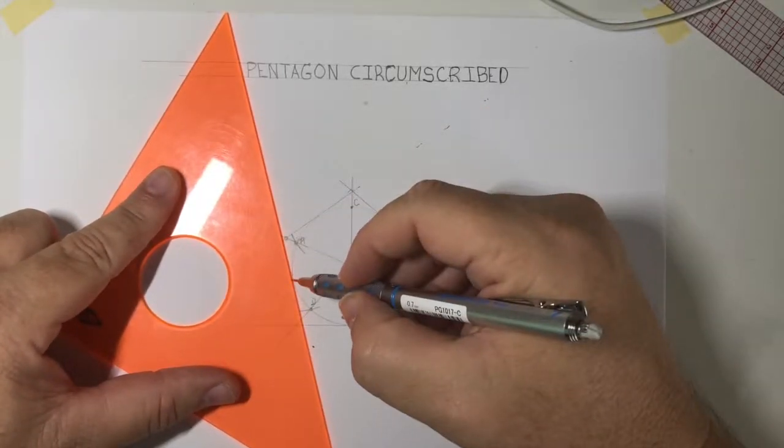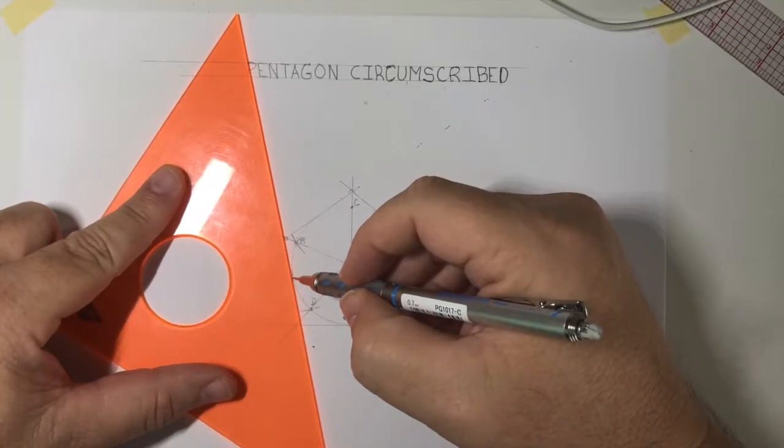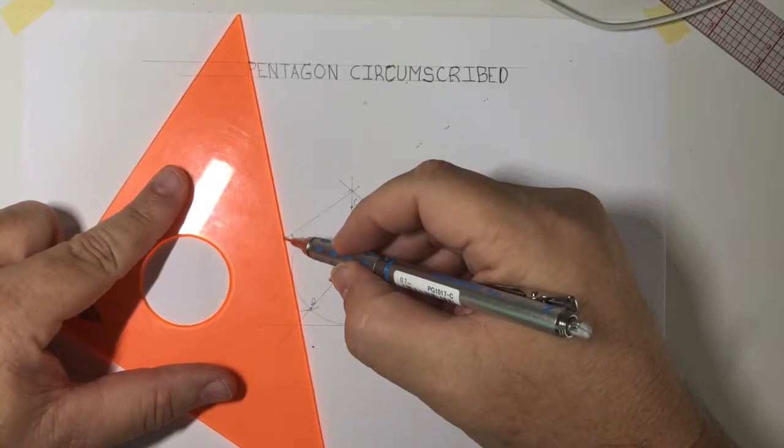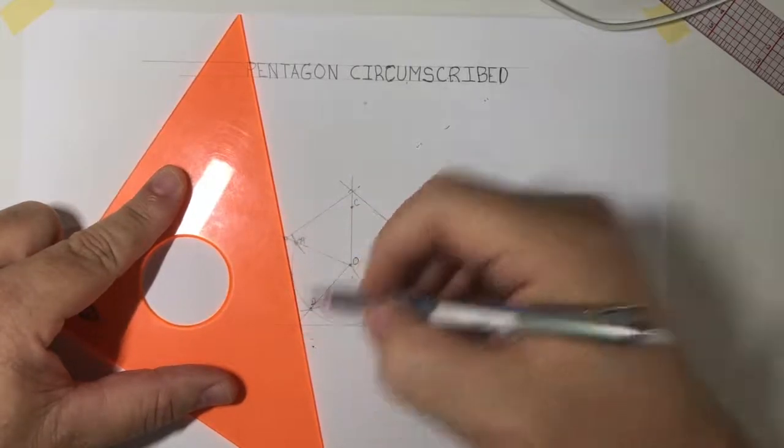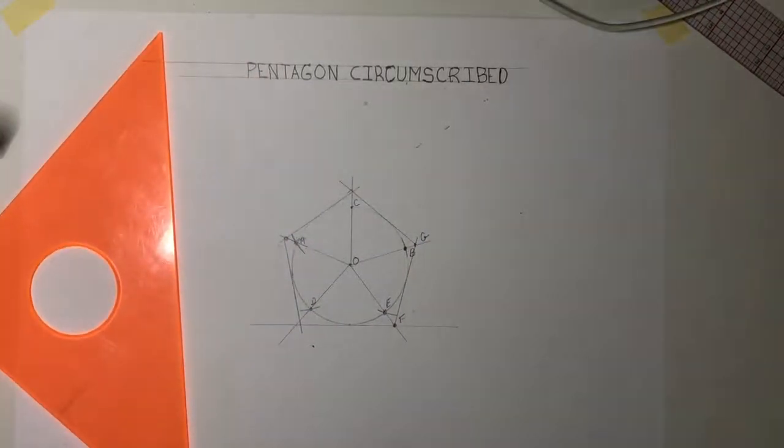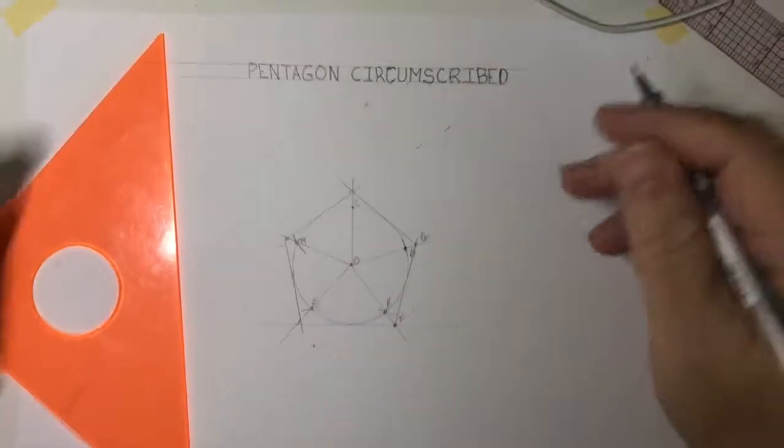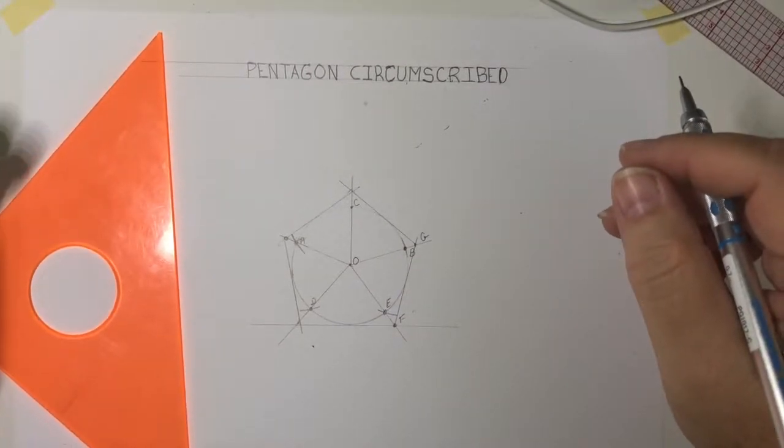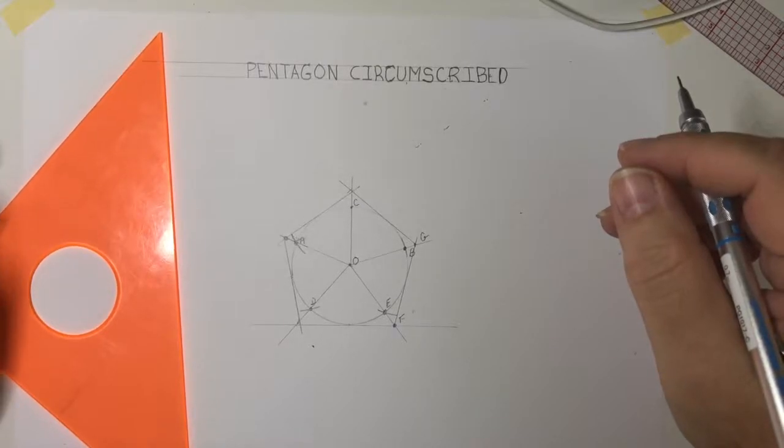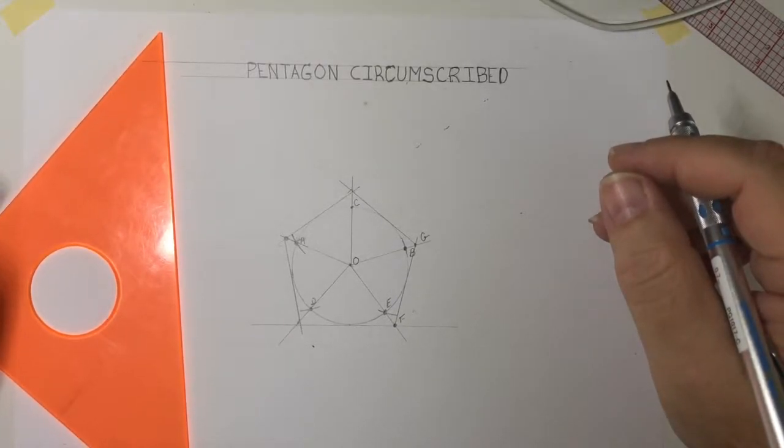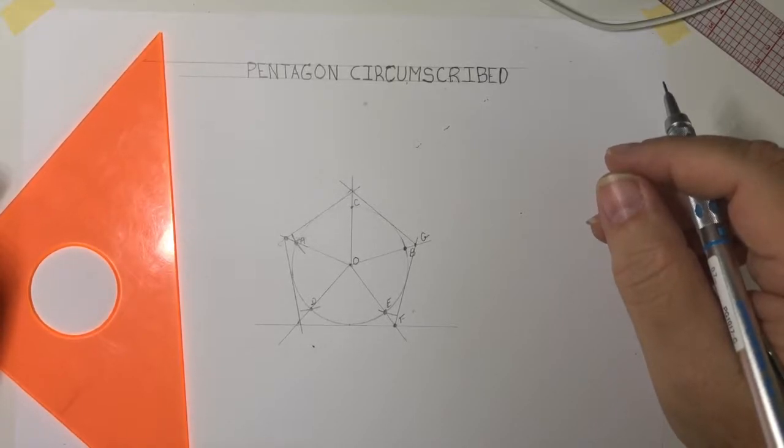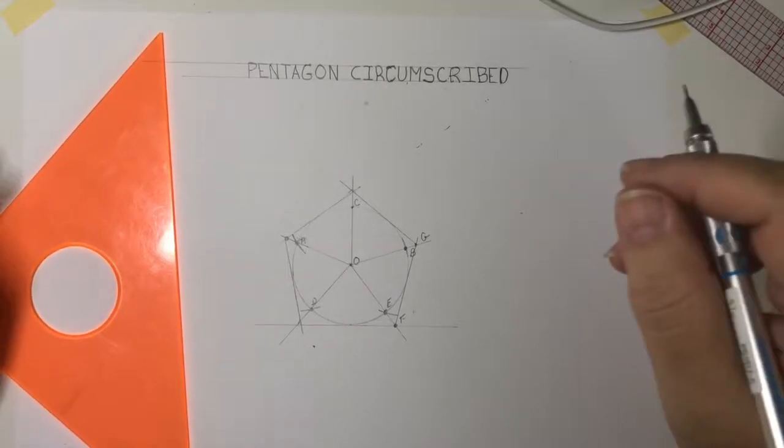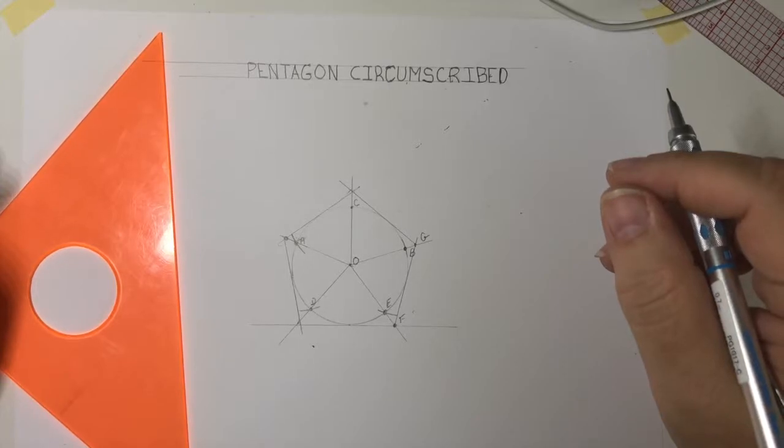And then from here, tangent until it's tangent to the circle and then intersects D. Now I have another point right there. And of course again it may not be 100% perfect, but that will get you there. So now I have a four foot circumscribed pentagon. Stay tuned for the next video, I'm going to show you how to draw an inscribed pentagon.